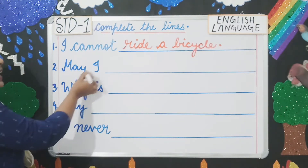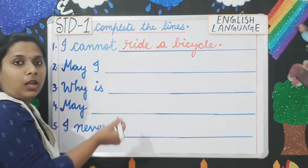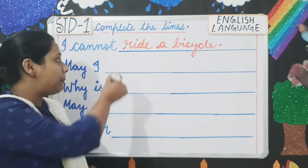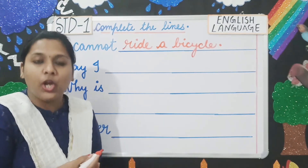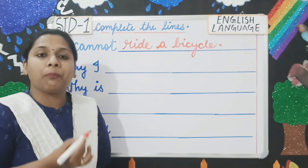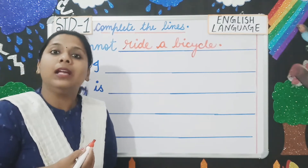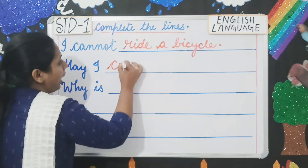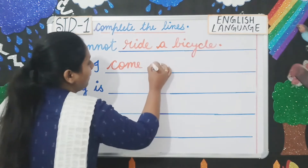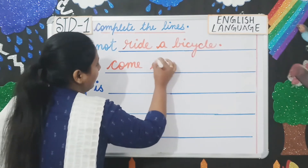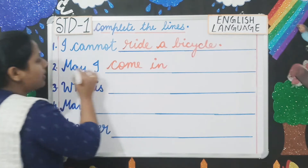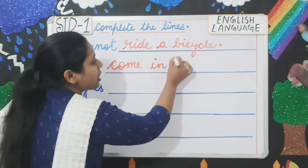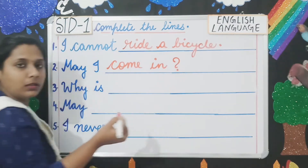Next prompt is 'May I.' You are asking something — 'May' means this is a question. You will write 'May I come in?' and since this is a question, you will put a question mark.